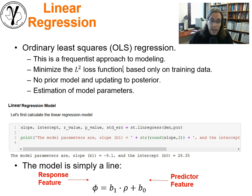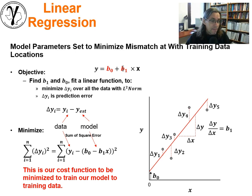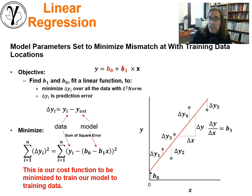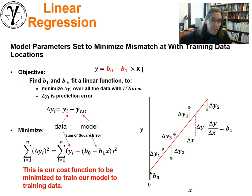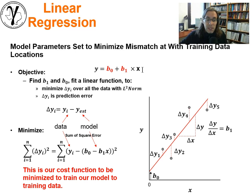We are just estimating the model parameters from the data. The form of our linear regression model will be the response feature is equal to some constant term or intercept B0, plus a slope term or model parameter applied to the predictor feature X1. This would be the case of a single predictor feature to build a model for a single response feature.